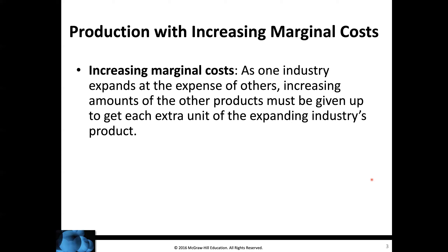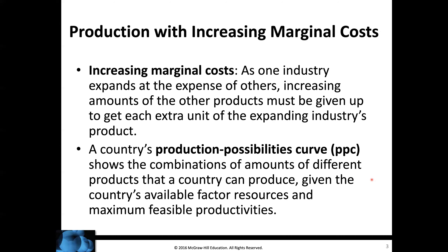It's not always a one-for-one replacement as we look at the production possibility curve. As one industry expands at the expense of others, increasing amounts of other products must be given up to get each extra unit of the expanding industry's product. A country's production possibility curve shows the combination of amounts of different products that a country can produce given its available factor resources and maximum feasible productivities.